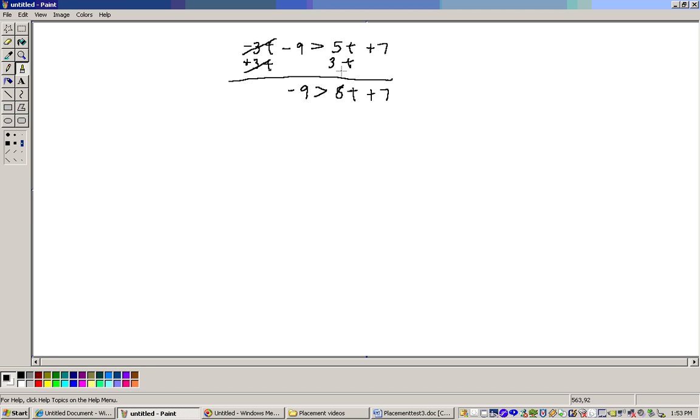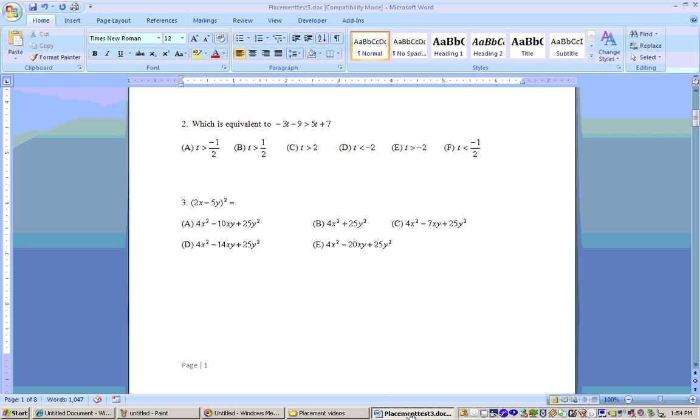Now I need to get all my numbers on the other side, so I subtract 7 from both sides and get minus 16 is greater than 8t. Finally, divide both sides by 8, and I get t is less than negative 2. Reading from right to left, t is less than negative 2. If I would have multiplied or divided by a negative number, you would need to change the direction of the inequality. The answer is t is less than negative 2, which is choice D.